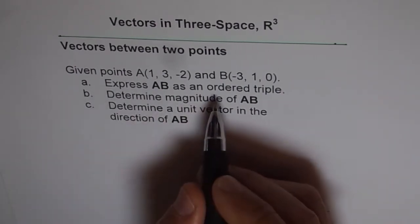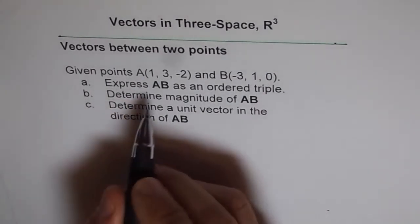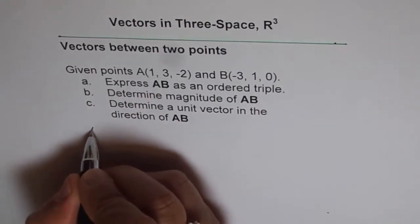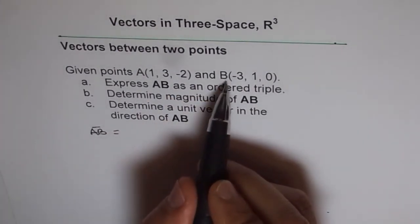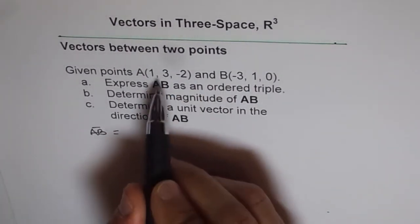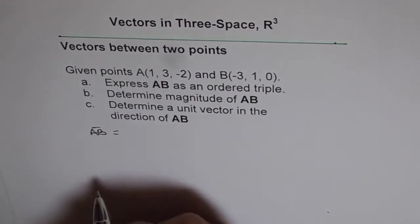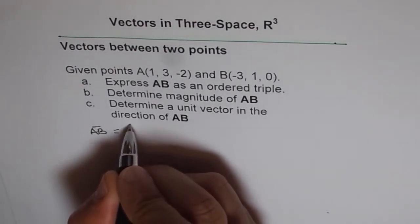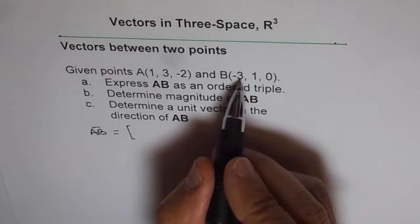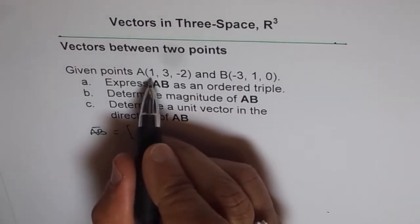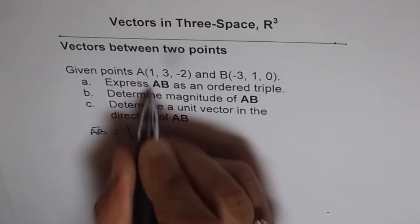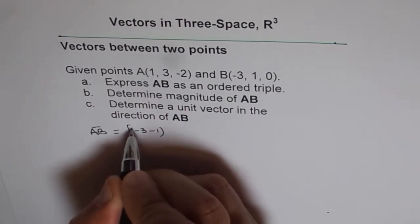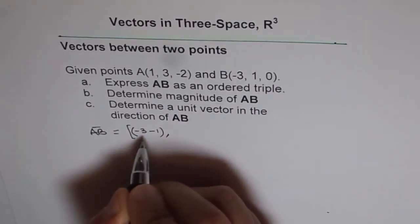To find the ordered triplet between A and B, vector AB is basically position B minus A. So we can write this as, for x values difference B minus A, it is minus 3 minus 1. So that is the direction number along x axis. And along y, it will be 1 minus 3.